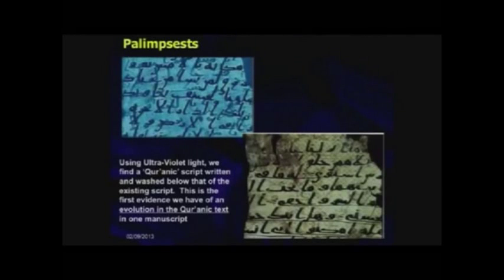When they looked at the palimpsests, they noticed that all of these manuscripts are written on skins — animal skins — known as parchment or vellum. And when they would write on the animal skins, they would wash it off and then write over top.